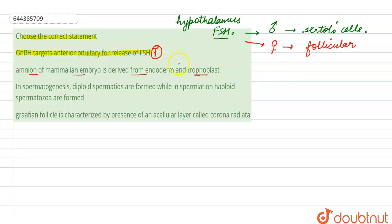So here we see that the amnion is not derived from the endoderm — it is derived from the mesoderm. So this statement is a false statement.